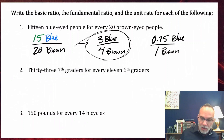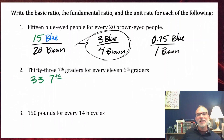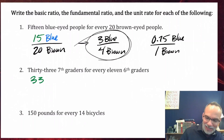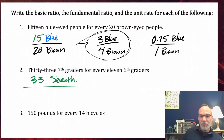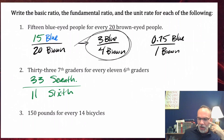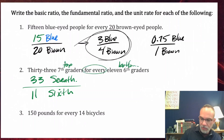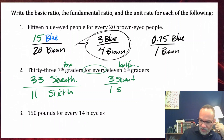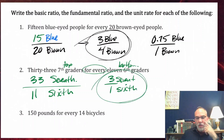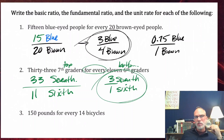Example two: 33 seventh graders for every 11 sixth graders. Write the number and then the label separately — don't run them together. The basic ratio is 33 seventh graders to 11 sixth graders. Order matters here. Reducing that gives 3 seventh graders to 1 sixth grader as the fundamental ratio, which is also the unit rate. That tells you there are three times as many seventh graders as sixth graders.